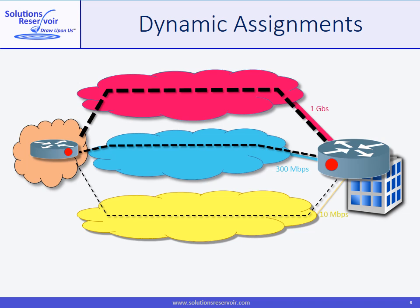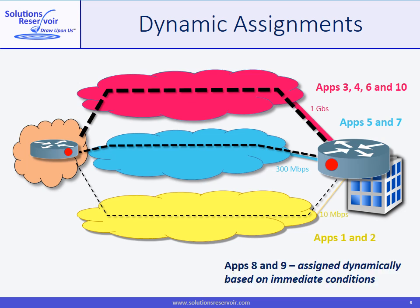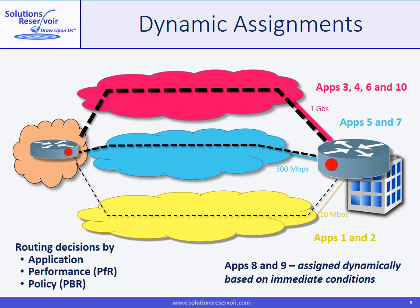In SD-WAN, the network has fine control of routing. Assuming 10 applications, let's say by policy that they are preferably routed thusly. Because in SD-WAN performance is monitored continuously, apps 8 and 9 are routed dynamically based on immediate conditions on all three networks. In fact, all apps can be rerouted if necessary. In SD-WAN, routing decisions can be based on combinations of factors.